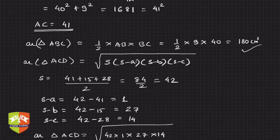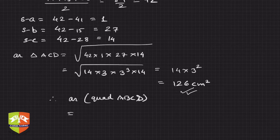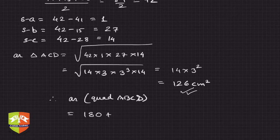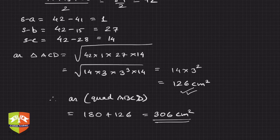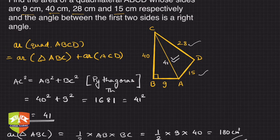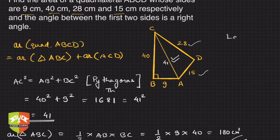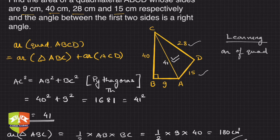So 180 plus 126 equals 306 centimeter squared. Now for the learning—it's good practice to write the learning at the end. The learning is: area of a quadrilateral can be found by breaking it down into triangles.